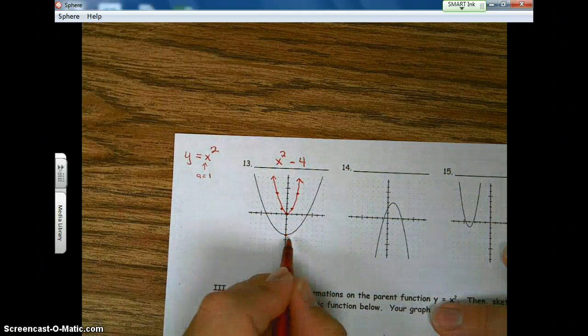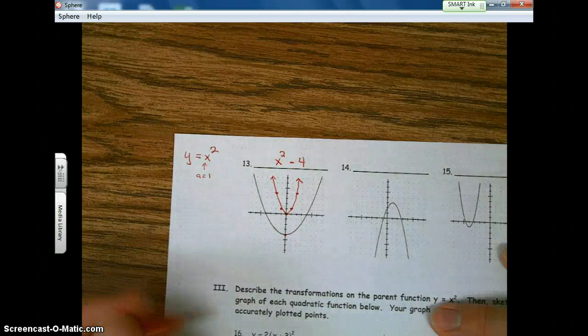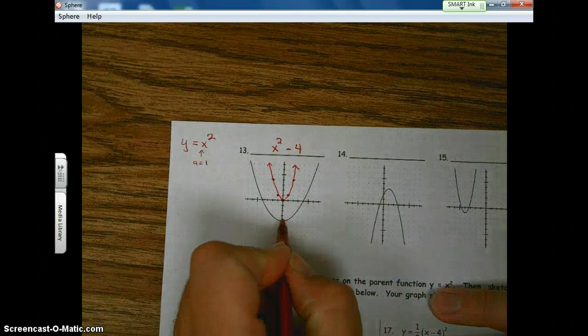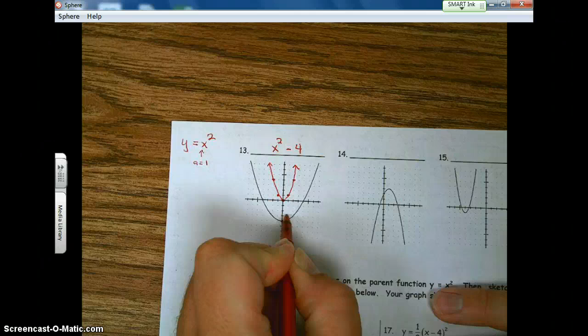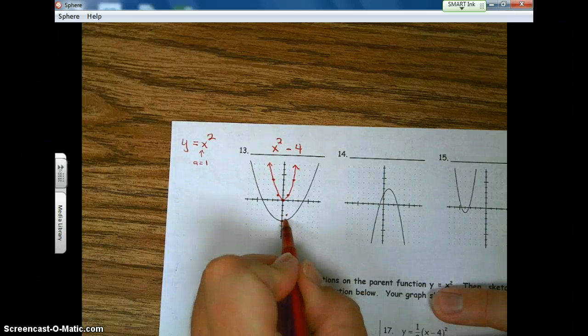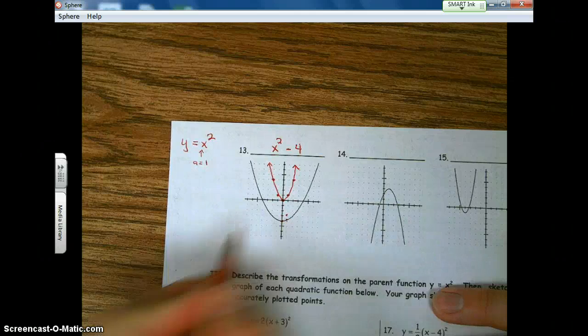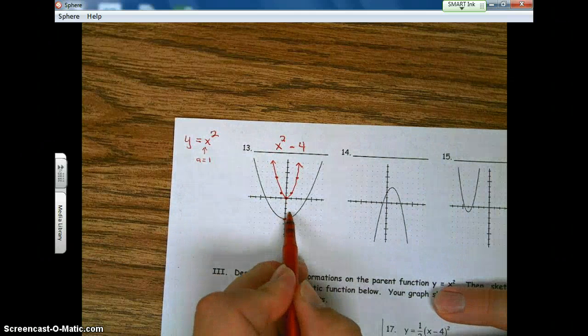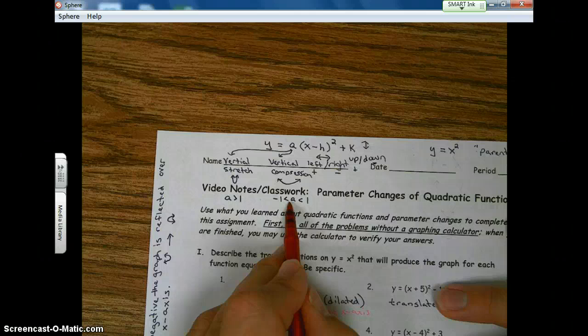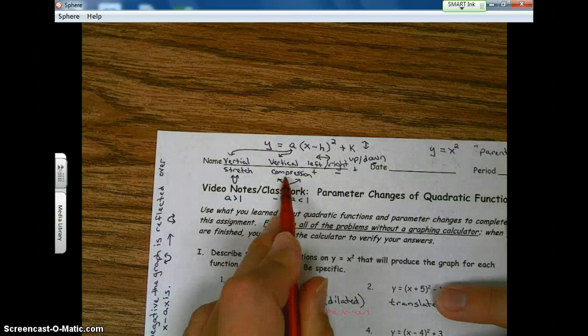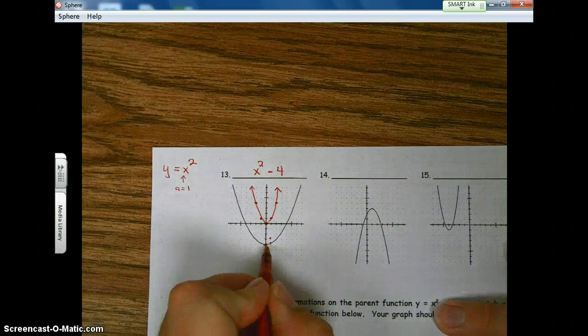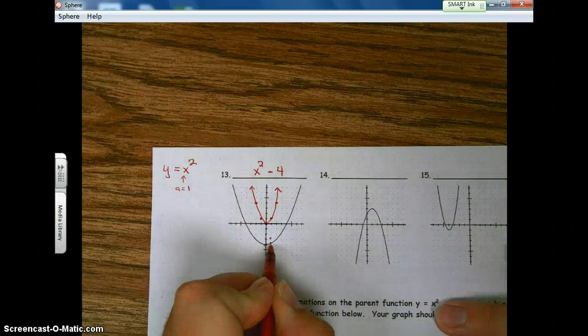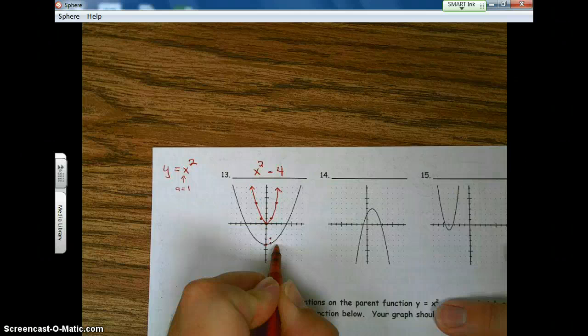Let's check out the a value. This one's a little bit tricky because if we go to the vertex and we go over one, notice if we go up one, we land here. Well, the parabola goes through right here. So the a value is going to be less than one. Now remember, because the a value is less than one, we have a compression. So let's go over two units.